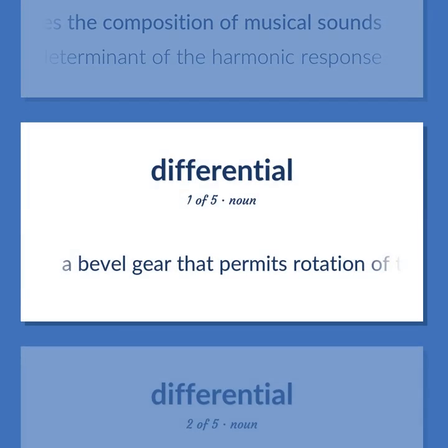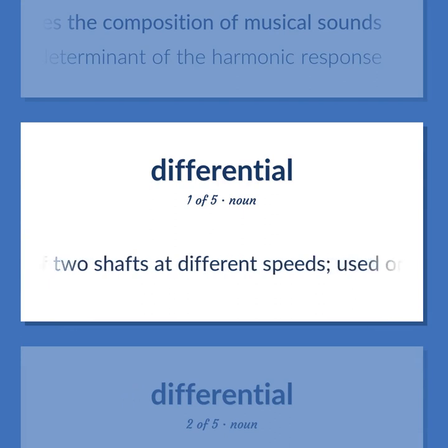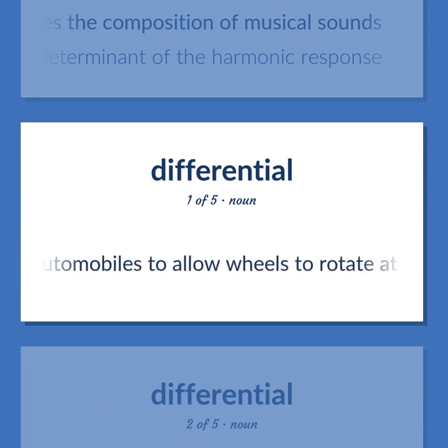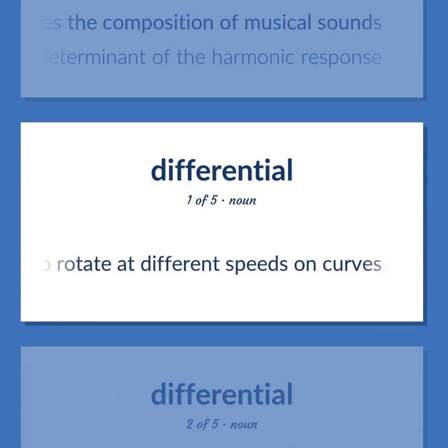Differential — a bevel gear that permits rotation of two shafts at different speeds; used on the rear axle of automobiles to allow wheels to rotate at different speeds on curves.